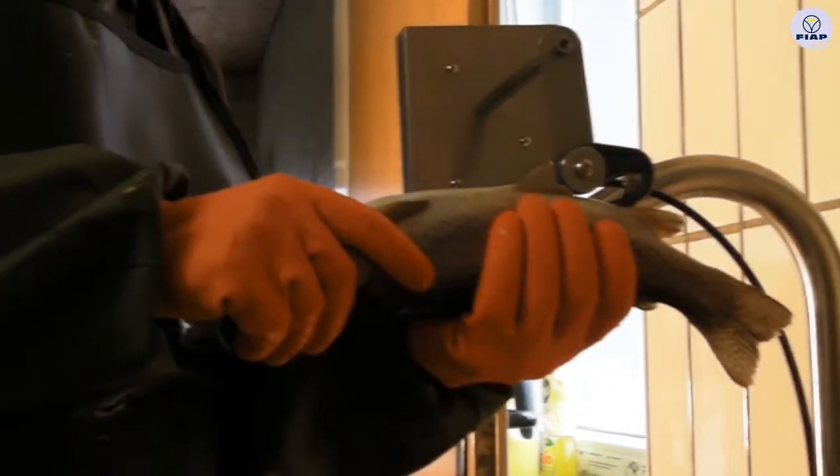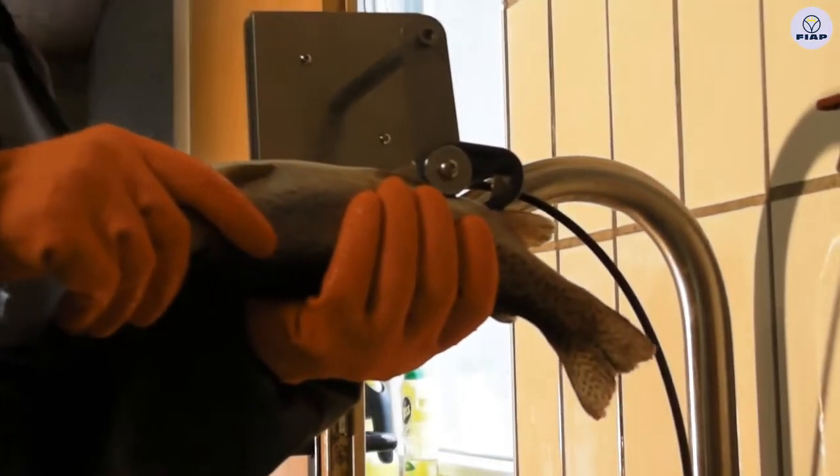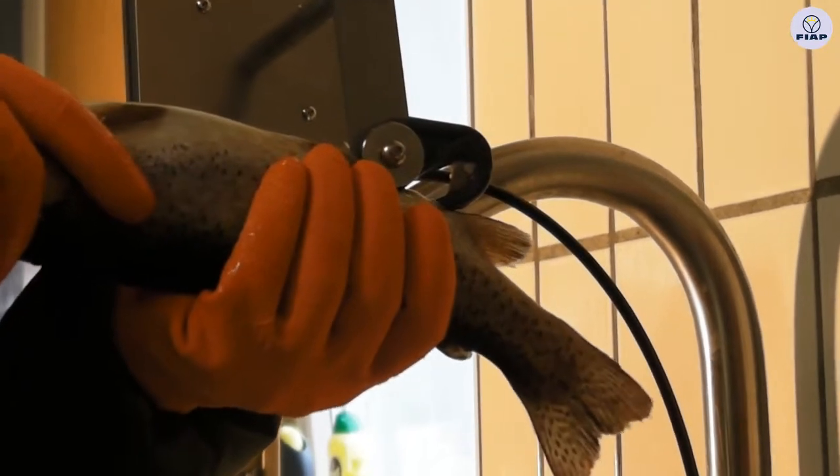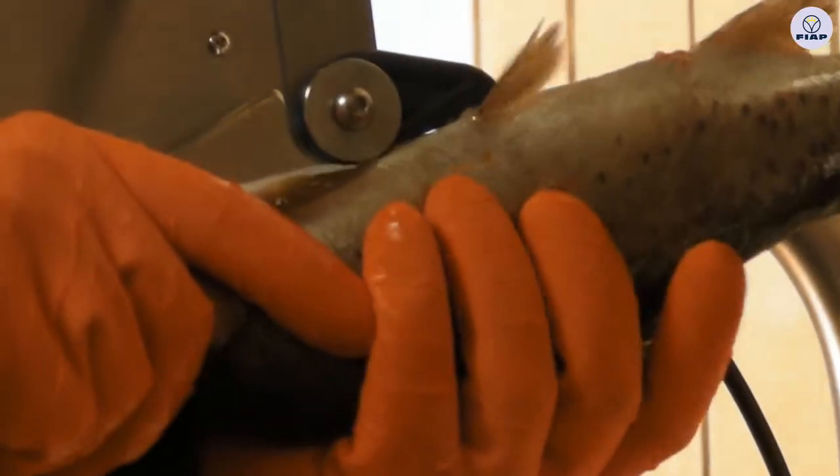Open the fish with the FIOP PROFIWORK ZEMOFIX knife. Then hook the knife in the anus of the fish and make a straight cut to the jills.